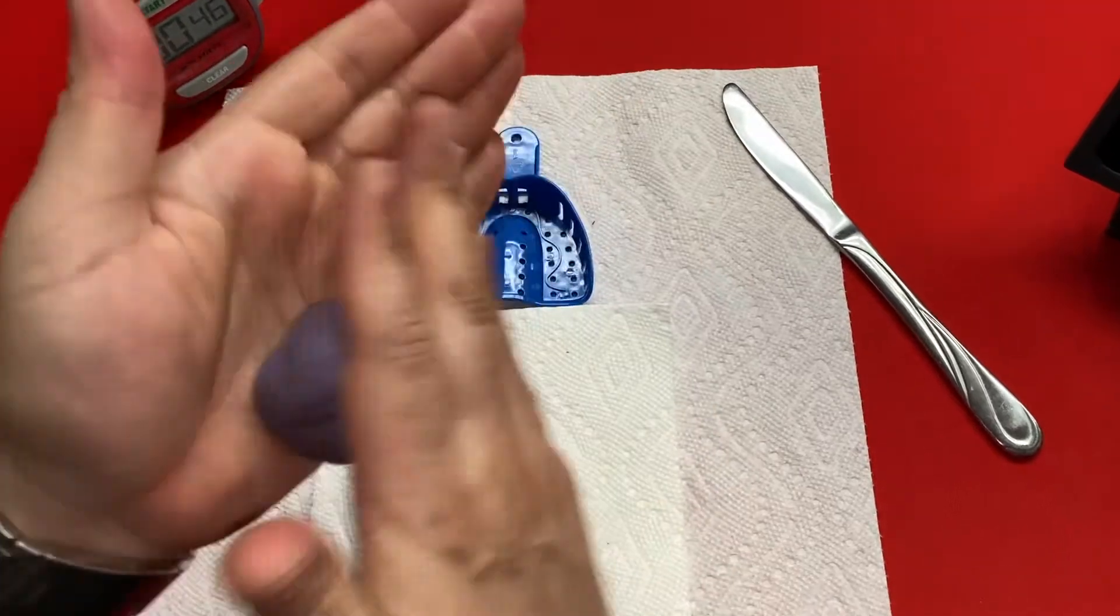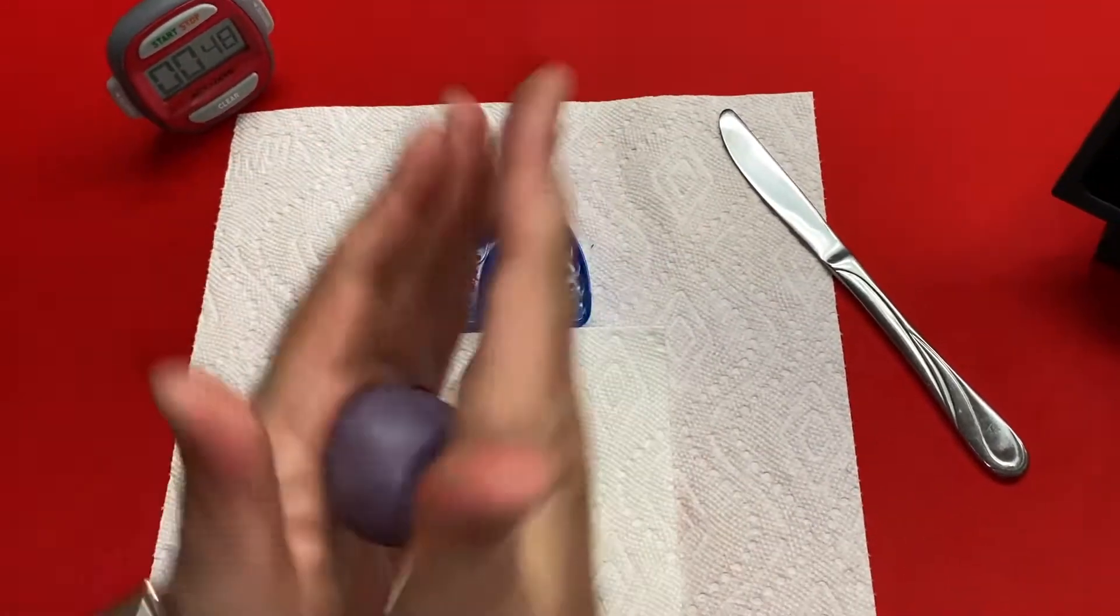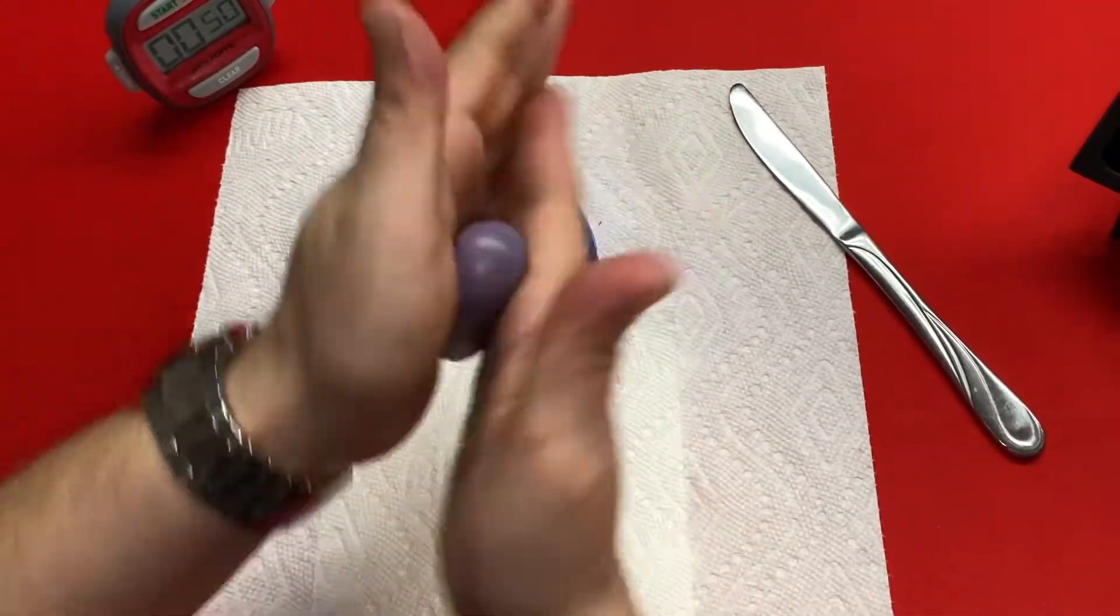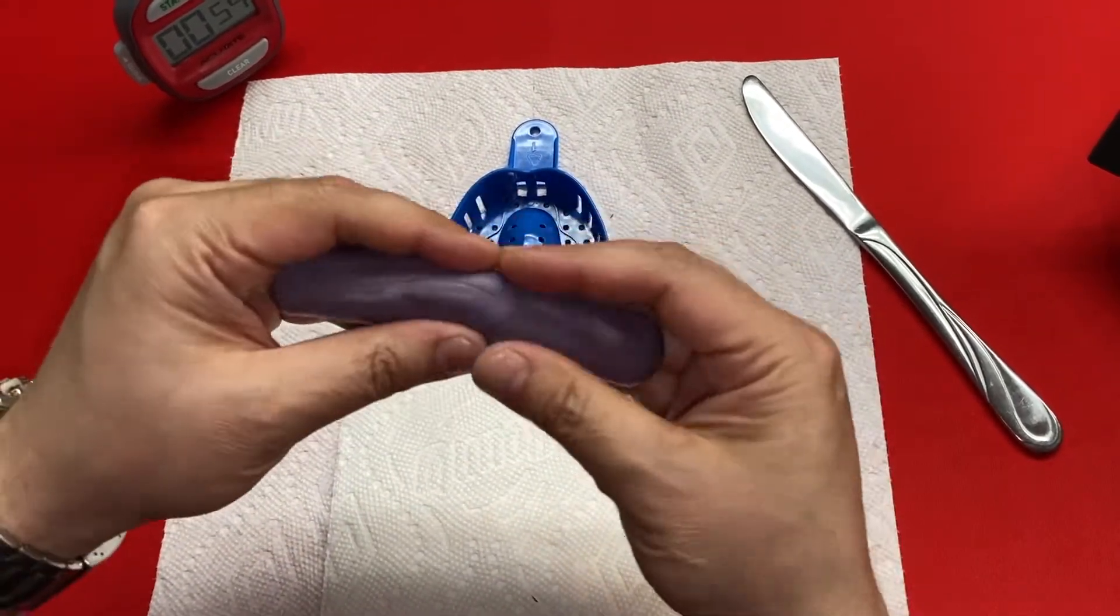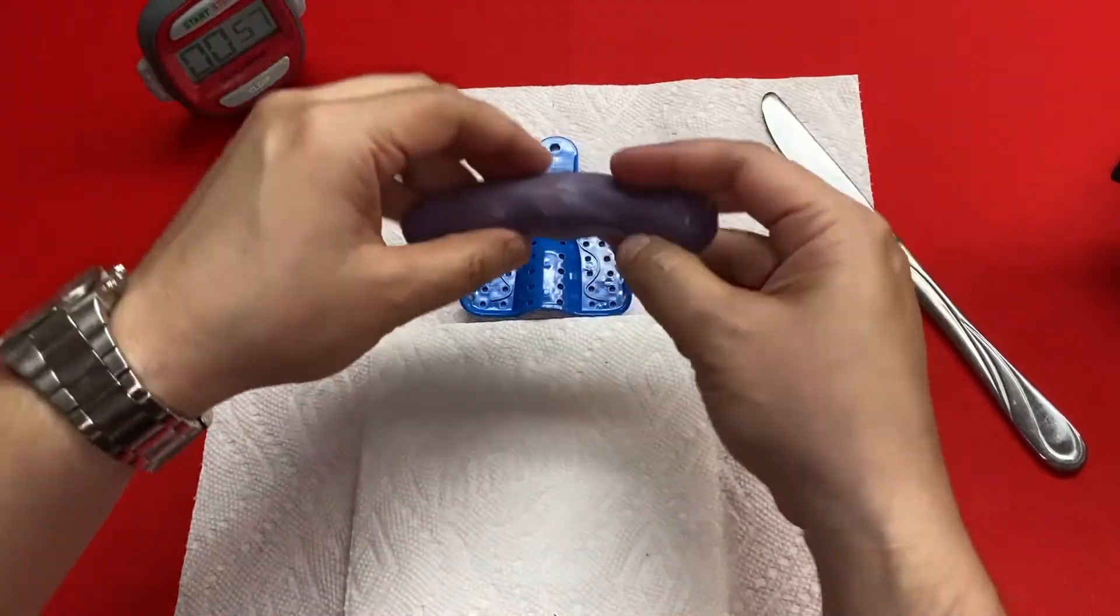Okay, 45 seconds. Now, real quick, roll it into a ball, and then you're going to roll it into a little cigar-looking thing about four to five inches. You want it to be fairly even.